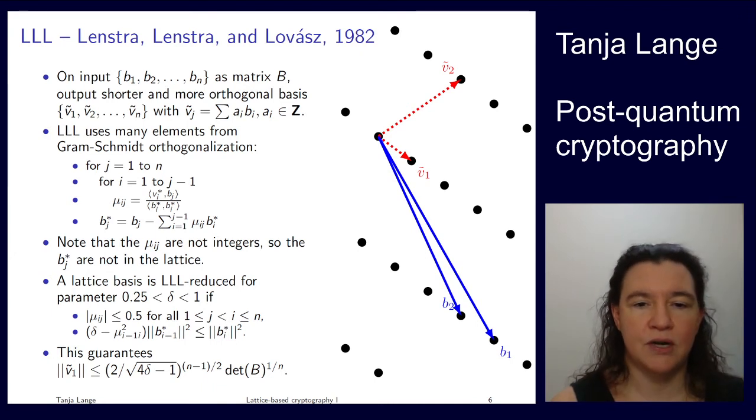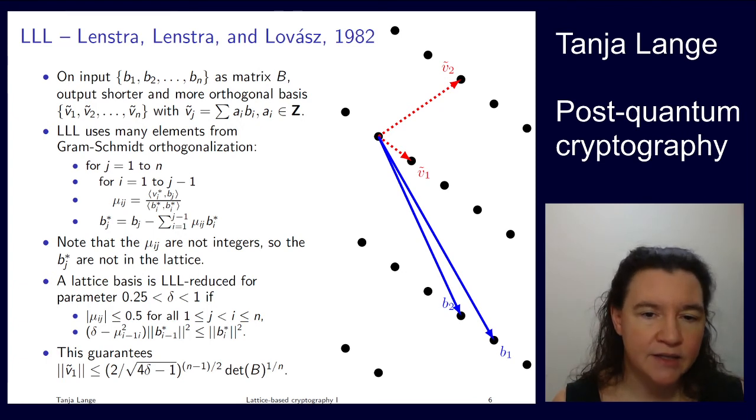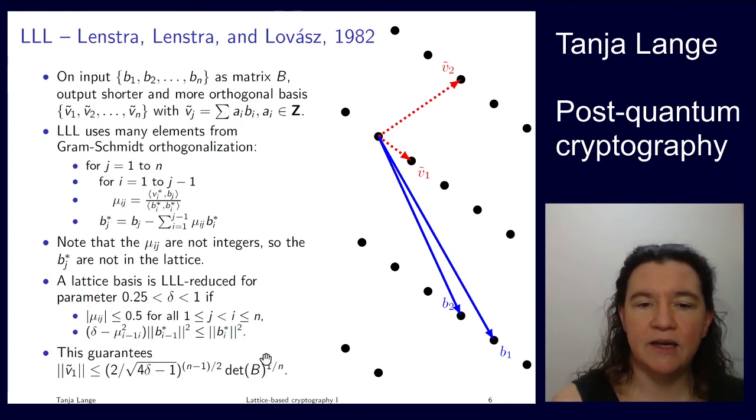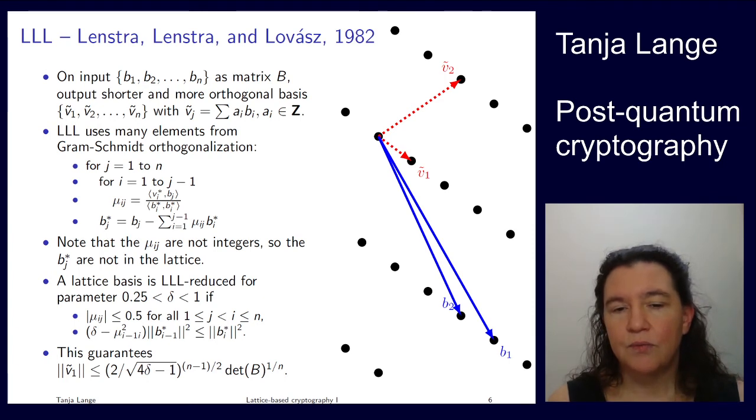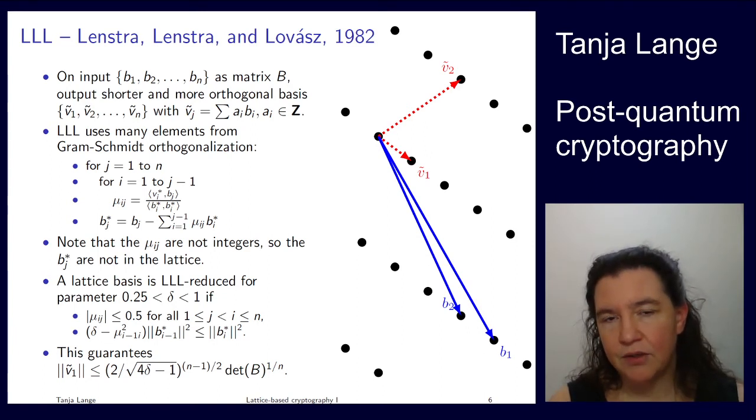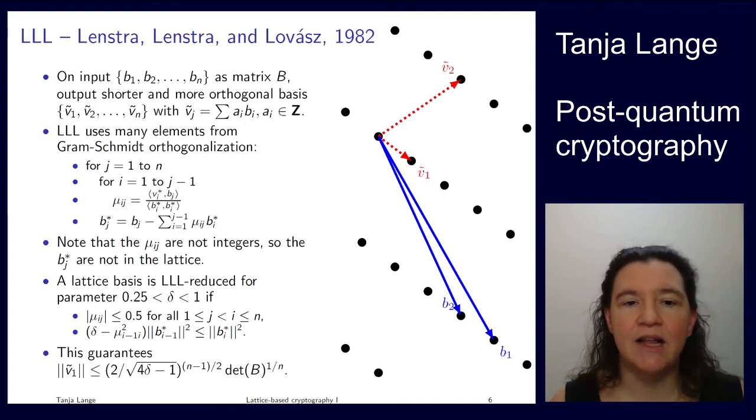The guarantee for the output basis is that the vector is this short. The determinant of the basis, we know that any change gives you a unimodular lattice, so that's an invariant of the lattice. The n is just the dimension. Then there's a factor in front where the same delta comes in. There are some estimates of how long the vectors are depending on the basis. This says you're not too far away from the shortest, but it's still an exponential factor. So it's an approximate solution, not the shortest. But depending on how nice or not nice the lattice is, LLL gets you pretty far.